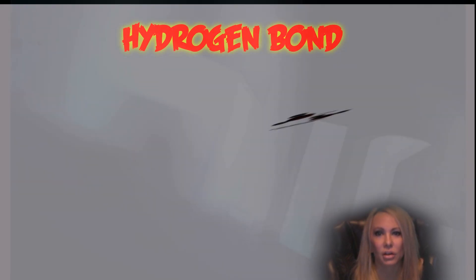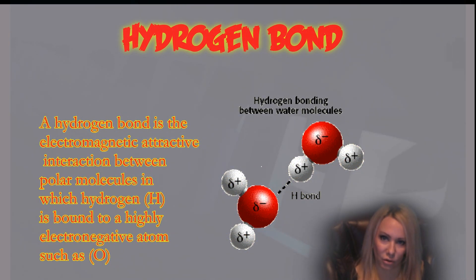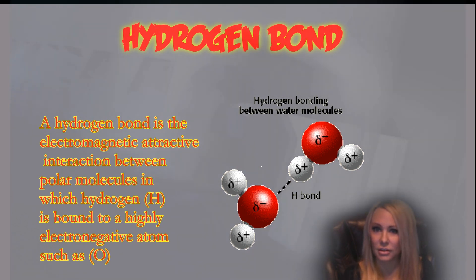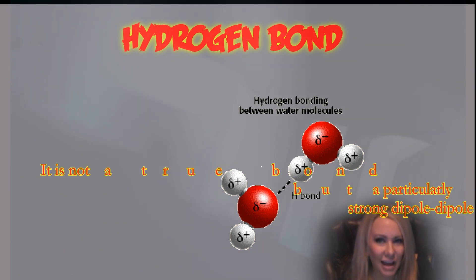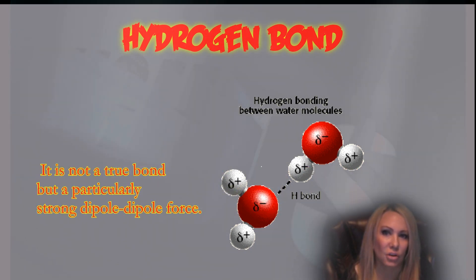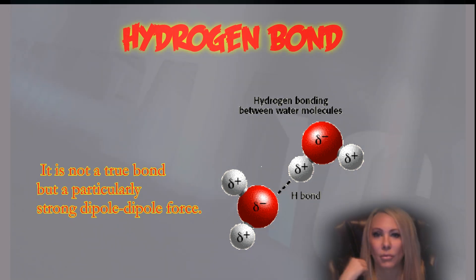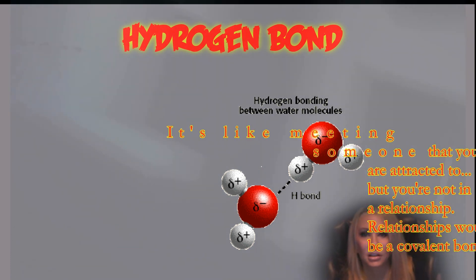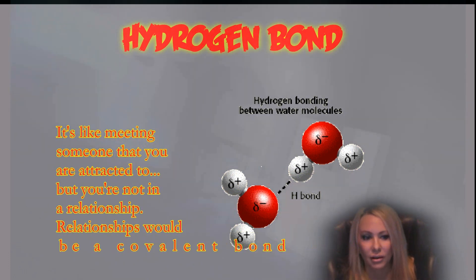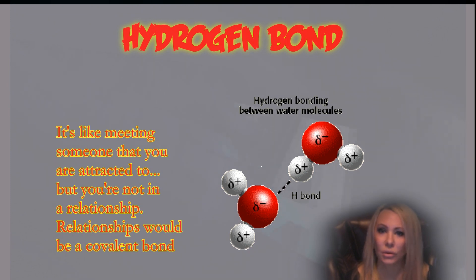The bond between water molecules is called a hydrogen bond, and it's a lot weaker than a covalent bond. The partially positive hydrogens of one molecule are going to be slightly attracted to the partially negative oxygen on an adjacent water molecule — that's a hydrogen bond. It's a relatively weak bond, which is good because that way we can dissolve things. When we dissolve things, we break the hydrogen bonds and remake them continuously. We want them weak, not strong.